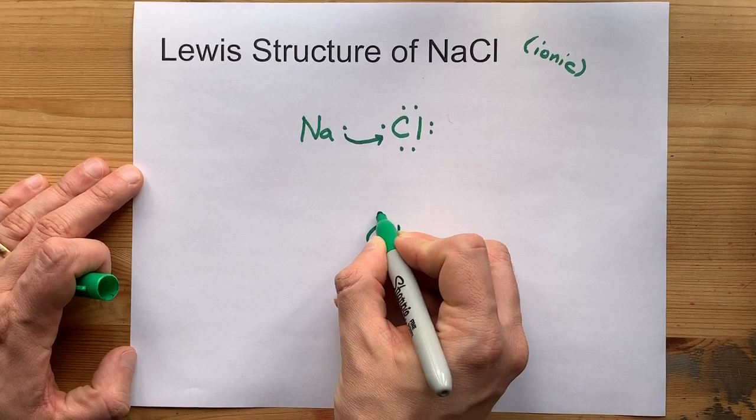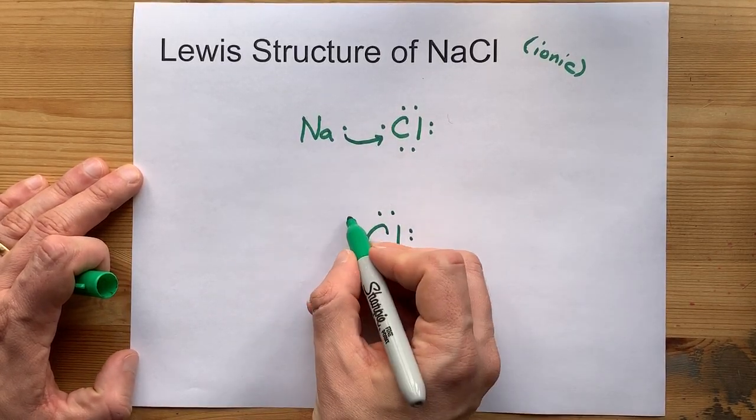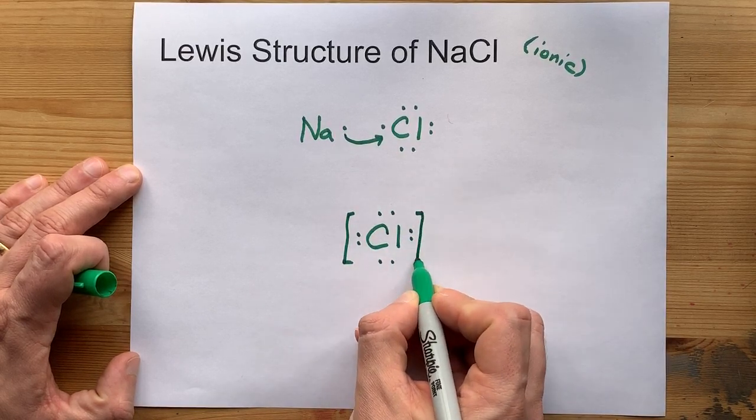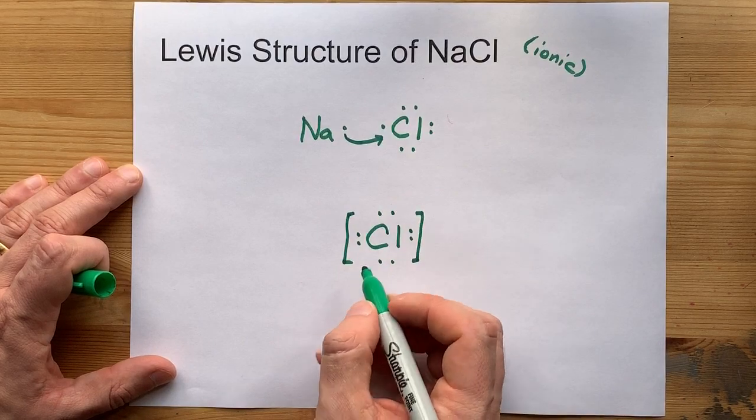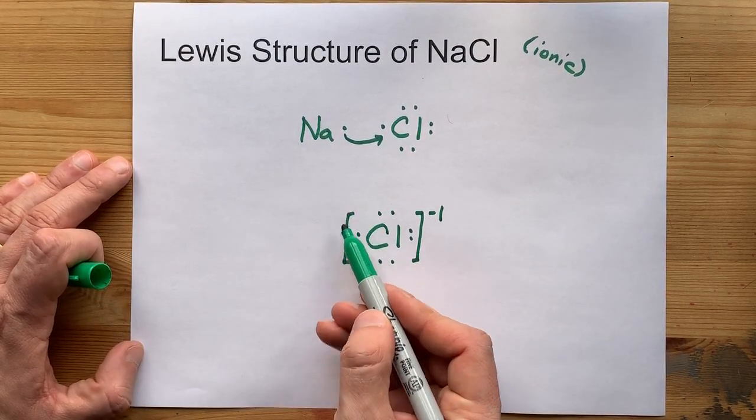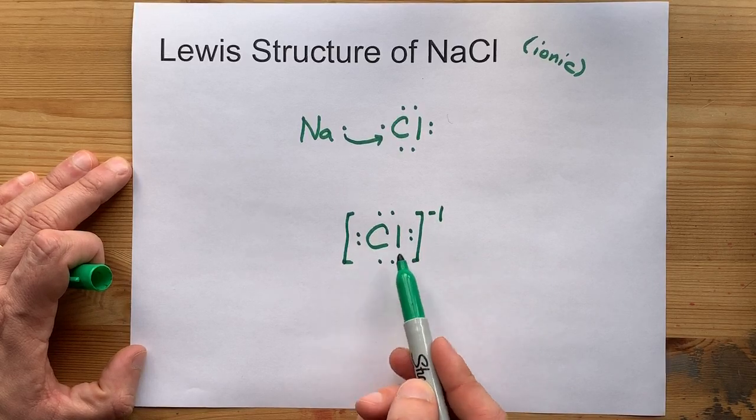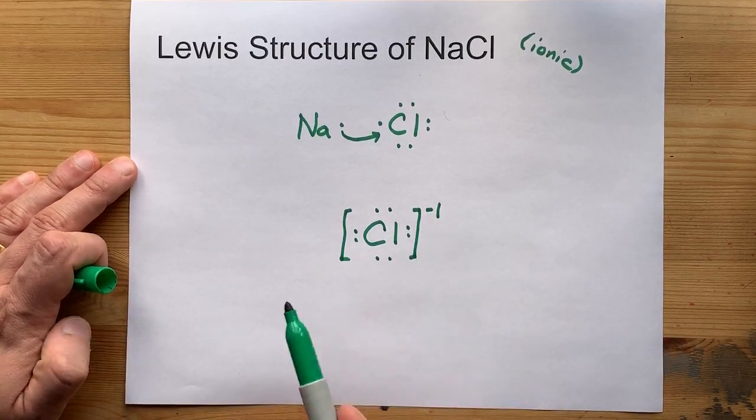Chlorine will have accepted an extra electron and now has eight around it. That is, by definition, an octet, and because it had one extra electron compared to before, it has a minus one charge on it. These square brackets represent the fact that this is an ion with a charge. You have to tell people what the charge is as well.